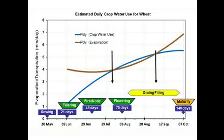With evaporation, when we plant on the 20th of May, the temperatures are declining towards the end of June and early July. And so because of that, the evaporation also declines. Then as soon as temperatures start warming up towards the end of July and into August, September, and October, the evaporation rates are going to increase quite significantly, especially in late September and October. Now, evaporation is greatly affected by three things: radiation, temperature, and wind.